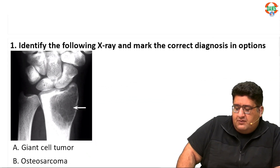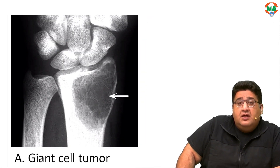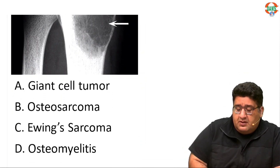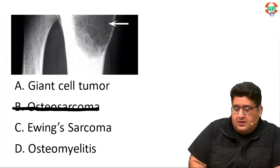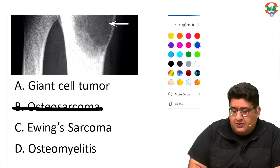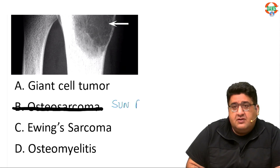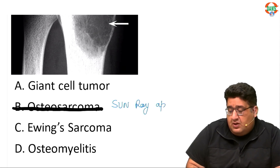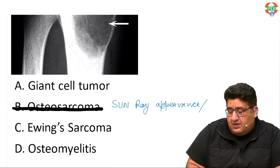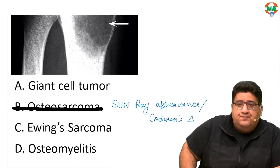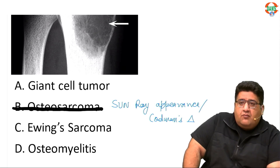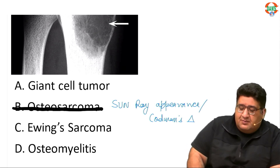The first question: identify the following X-ray and mark the correct diagnosis. First of all, you cannot mark the answer as osteosarcoma. The reason is simple — to call it an osteosarcoma, you have to have a sun ray appearance. I don't think you can see any sun ray appearance, and I don't think you can see any Codman's triangle.